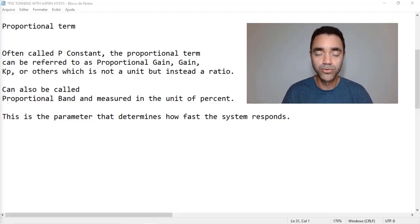It's important to mention that if you have a controller that only uses the proportional band or the proportional term, you will never reach the set point. You will always have an offset between the set point and the value, the present value. To reach the set point, you must have the integral part of the PID controller.